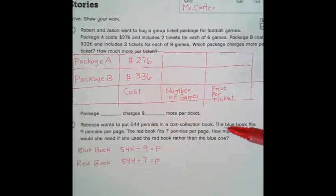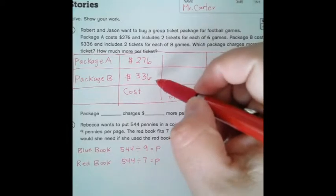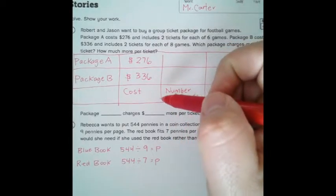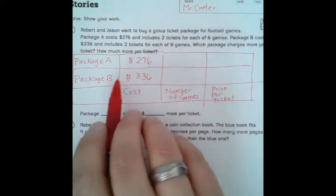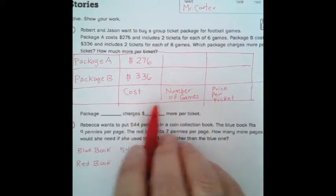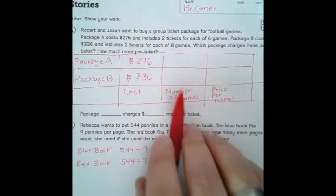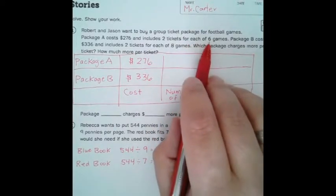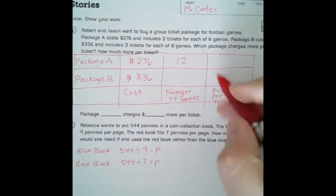So to organize my thinking, I kind of made this table here. So, right away you might say, well, package B costs more because it's $336 and this one's only $276. But that might not be the case because each package comes with a different amount of games. So if we look back at package A, it costs $276. Well, the number of games, it's two tickets for each of six games.